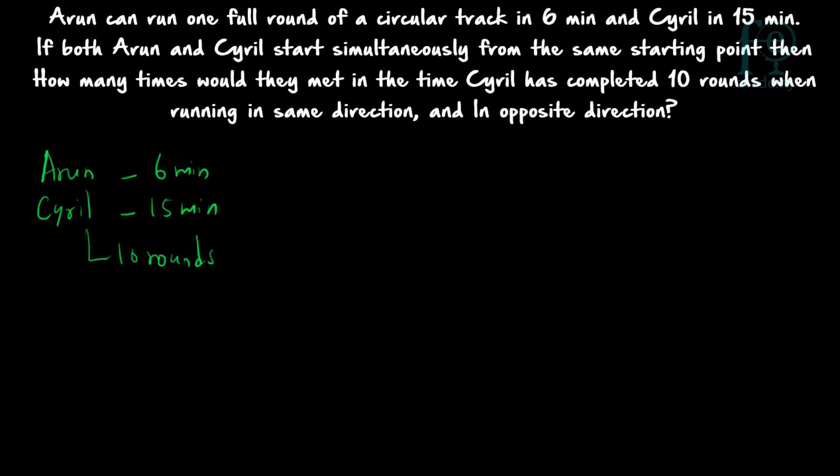We need to find how many times Arun and Cyril have met each other under two situations: one, running in the same direction, and second, running in the opposite direction. First, find out how many rounds Arun has completed in the same time. Cyril takes 15 minutes to complete 1 round, so for 10 rounds the time taken by Cyril will be 150 minutes.